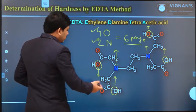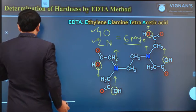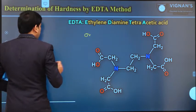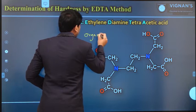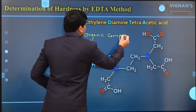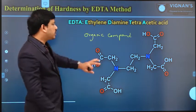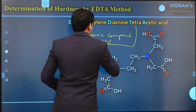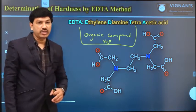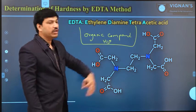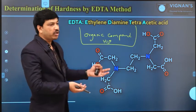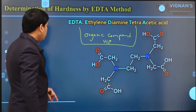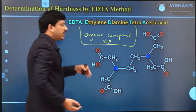But the problem is with respect to the nature of the molecule — this is one of the organic compounds. Generally, organic compounds have less solubility in aqueous medium like water. If you dissolve this compound into water, the solubility is very, very less — it is actually partially soluble in water. So we cannot use this molecule directly for titration purposes, because for titration we always need a homogeneous solution only.